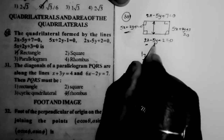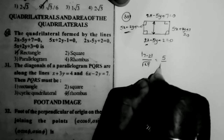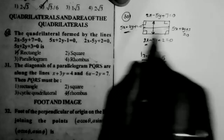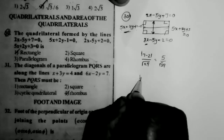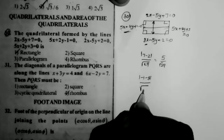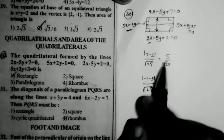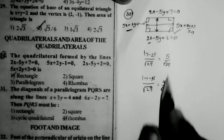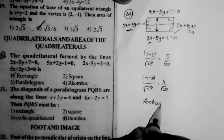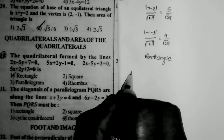Distance between lines 1 and 3: |C1 - C2| / √(A² + B²) = |7 - 2| / √29 = 5/√29. Distance between lines 2 and 4: |-1 - 3| / √(25 + 4) = 4/√29. Since the distances are not equal, the quadrilateral is a rectangle, not a square.